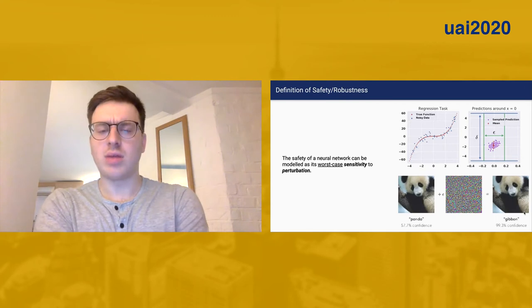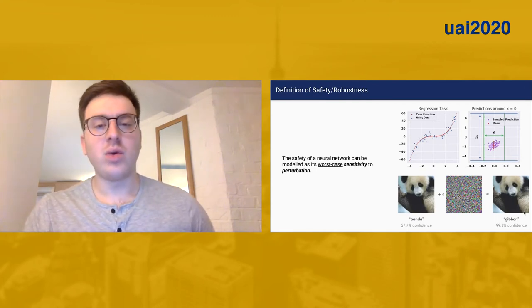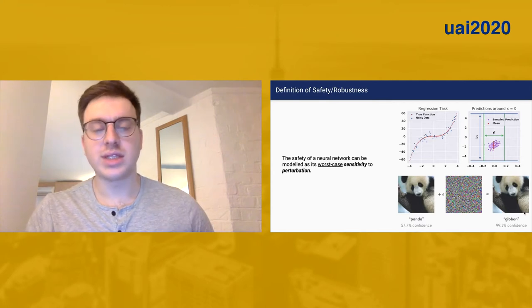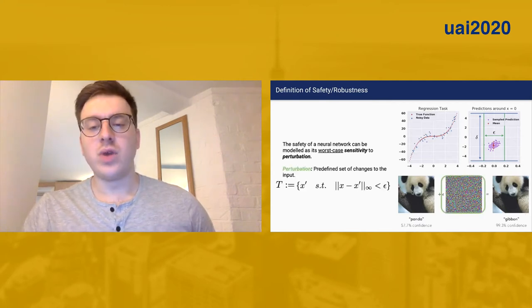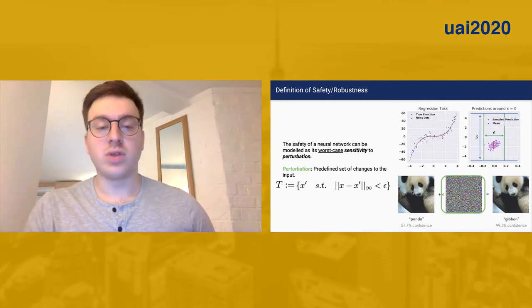In this work we care about checking the safety of a BNN, and how we model that is as the safety of a BNN is its worst case sensitivity to perturbation. So if we allow our input to be perturbed, for example, by plus or minus epsilon.